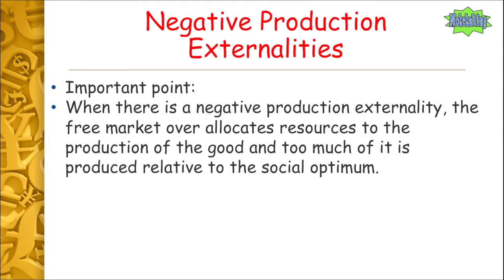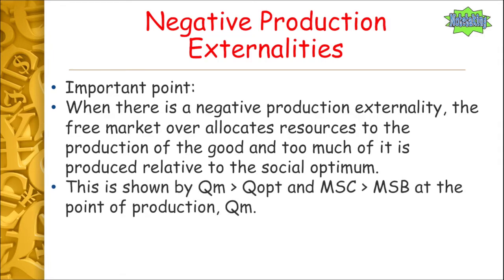An important point: when there is a negative production externality, the free market over-allocates resources to the production of the good and too much is produced relative to the social optimum. This is shown by Qm being greater than Qopt, and marginal social costs being greater than marginal social benefits at the point of production Qm.